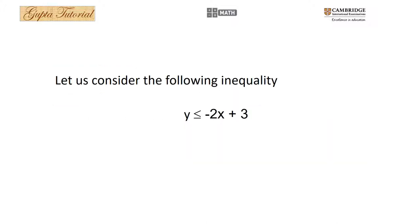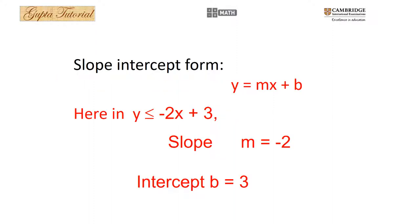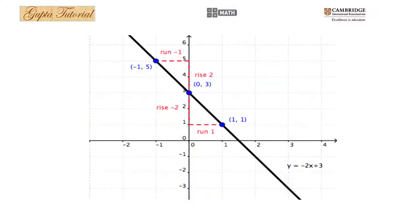Let us consider the following inequality: y ≤ -2x + 3. Using slope-intercept form y = mx + b, the slope is m = -2 and the y-intercept is b = 3. Putting this on graph paper, the coordinate pairs we get are (-1, 5), (0, 3), and (1, 1), and you can draw a straight line through these points.